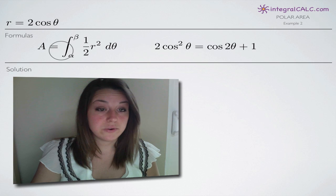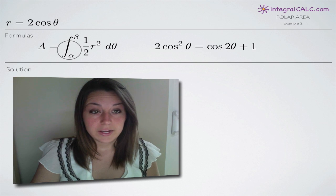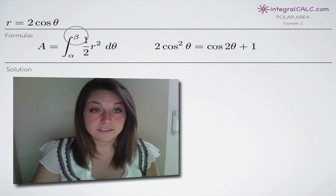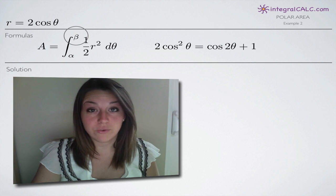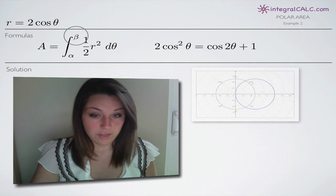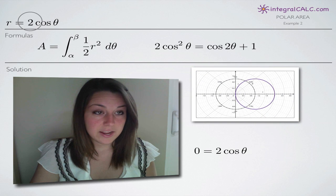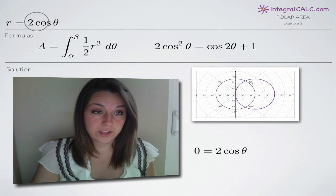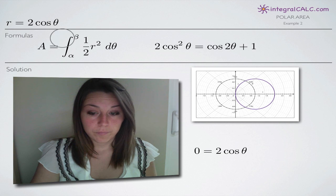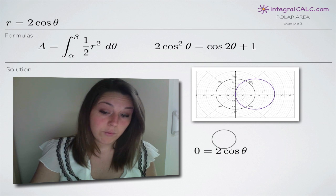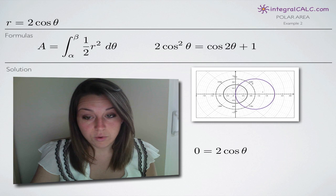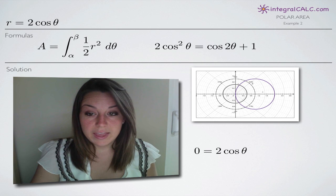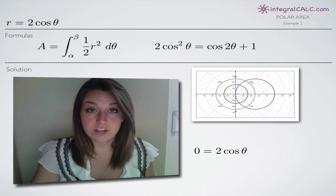The first thing we need to do is address the issue that we don't have our limits of integration, alpha and beta. Sometimes they're given to us, but in this case we have to find them ourselves. The way we do that is by setting our original function, two cosine theta, equal to zero. That tells us where our graph intersects the origin, and will give us our limits of integration.